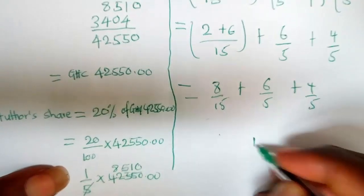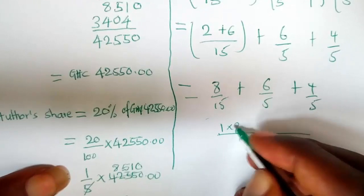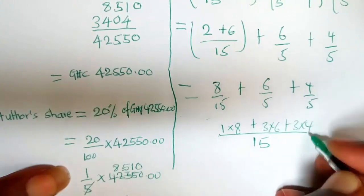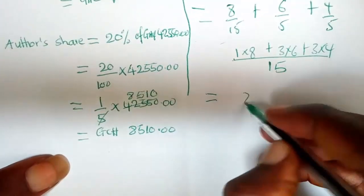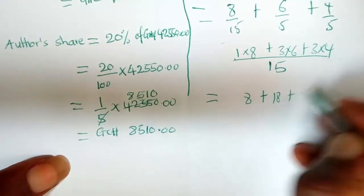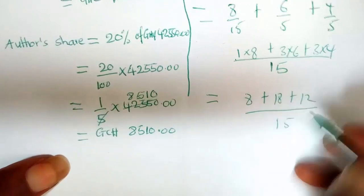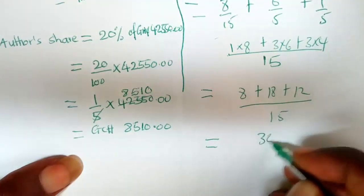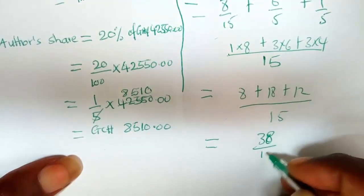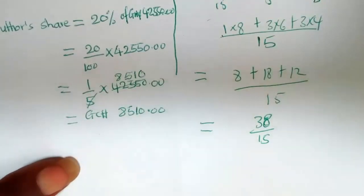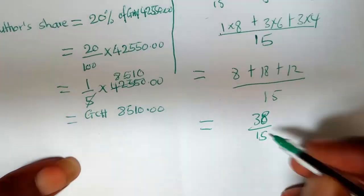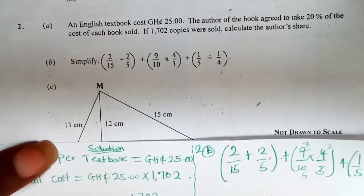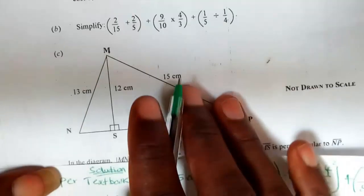The LCM of 15, 5, and 5 is 15. So this gives us: 1 times 8, plus 3 times 6, plus 3 times 4, all over 15. That is 8 plus 18 plus 12, all over 15. So this gives us 38 over 15, which we can also write as 2 and 8 over 15.